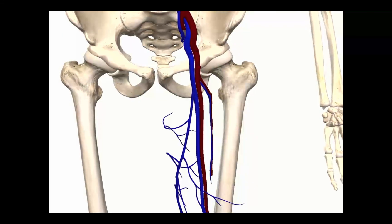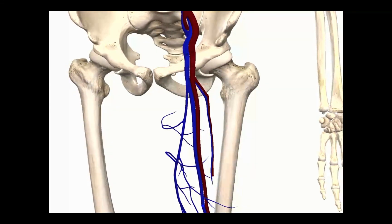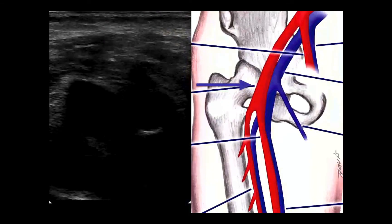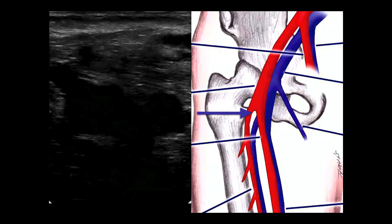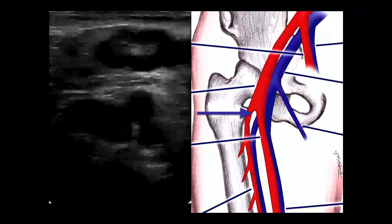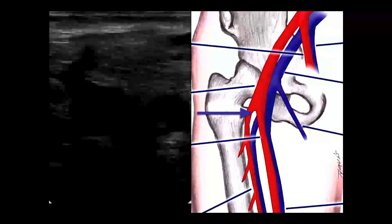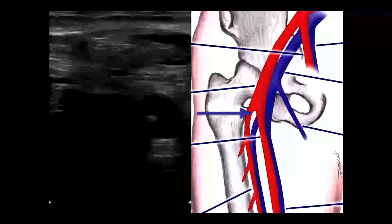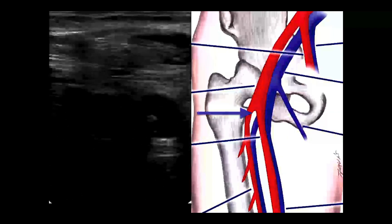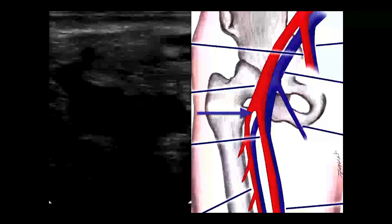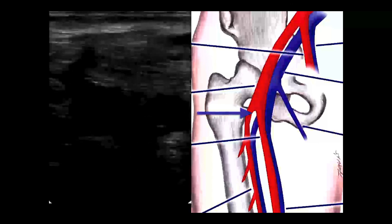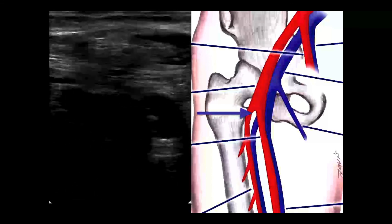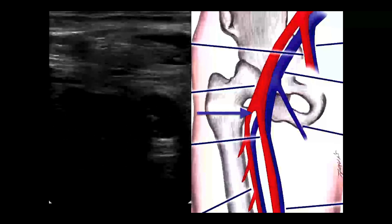After the greater saphenous vein junction, we see a bifurcation of the femoral vein. Looking at the sonographic image on the left and the schematic on the right, in the upper segment we can see the junction of the greater saphenous vein to the common femoral vein — almost like an elephant trunk coming in on the left side. On the other side of that large vein, you can see the bifurcation of the femoral artery into the femoral artery and the deep femoral artery.